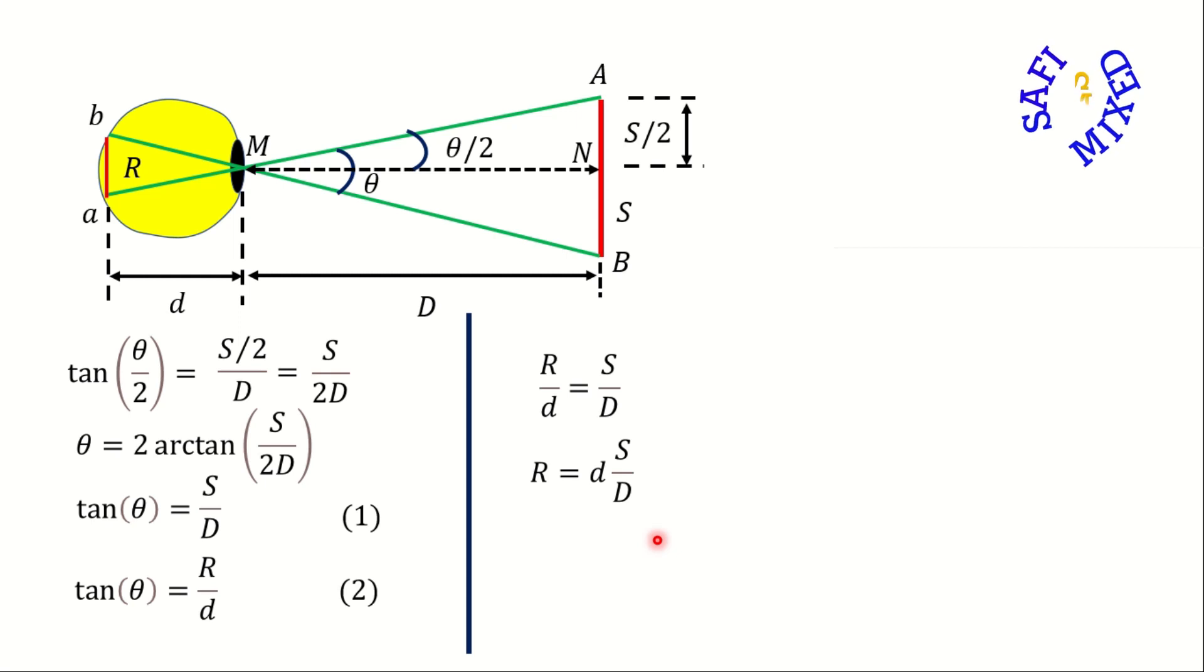For a given eye, small d is a constant. Keeping this in mind the apparent size R of the object can be written as R directly proportional to S divided by capital D.